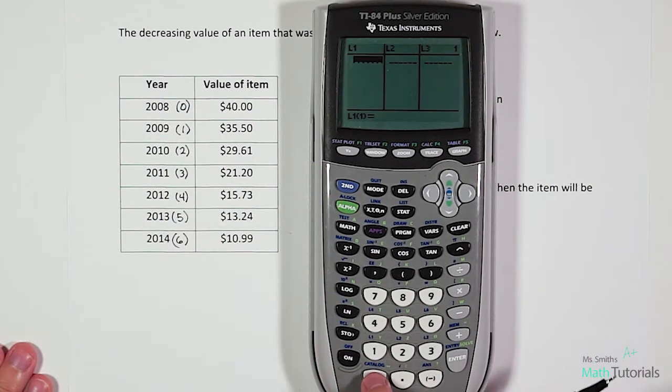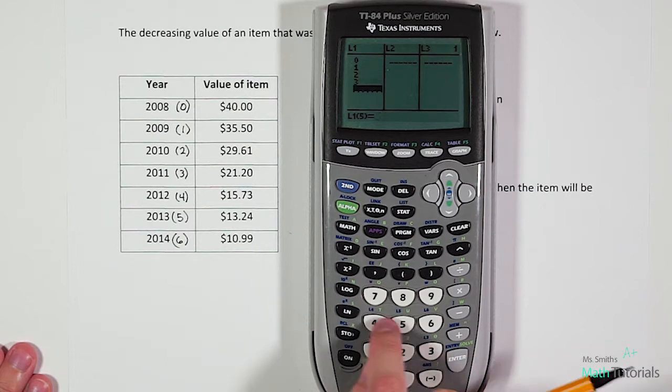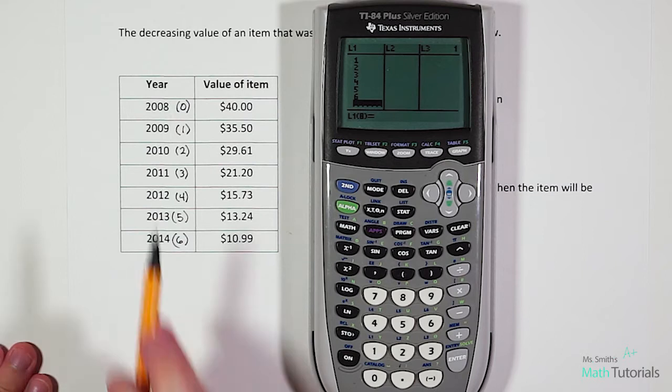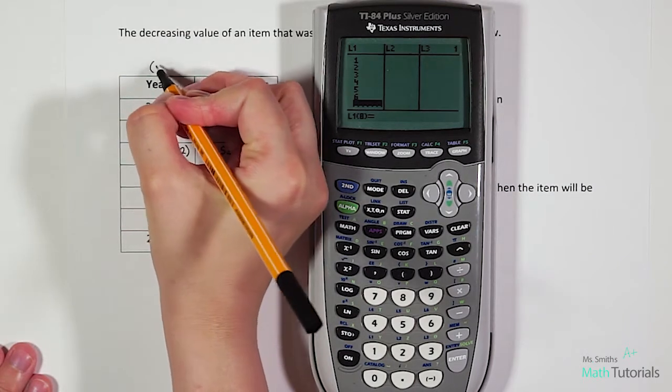Now let's put in our new data. So we've got zero, one, two, three, four, five, six. That is our X column, because remember year is our X value.